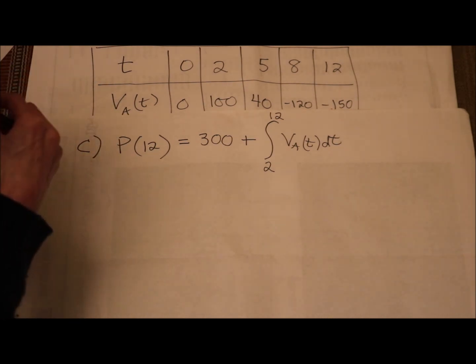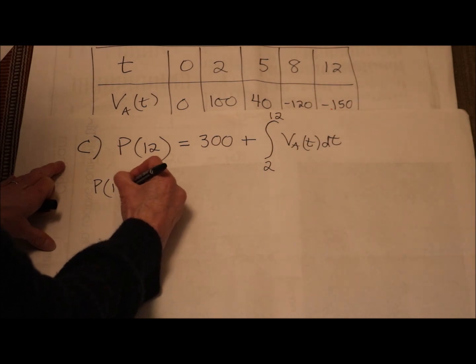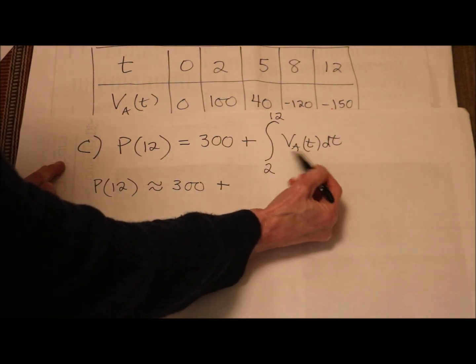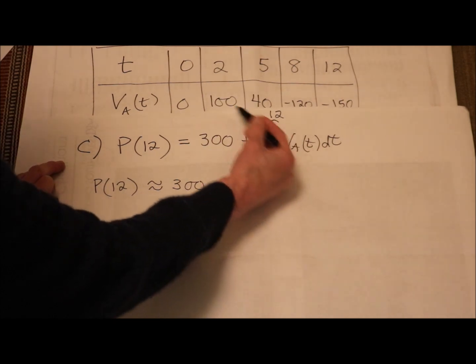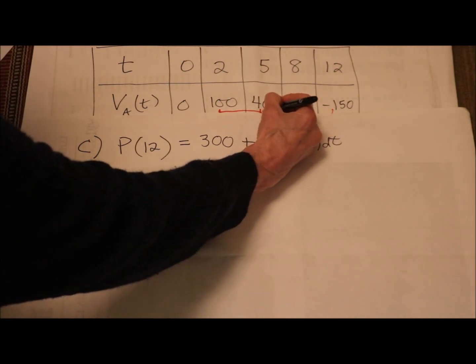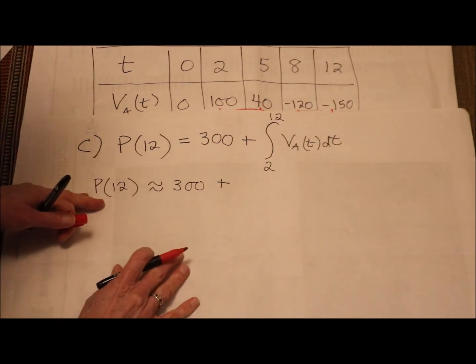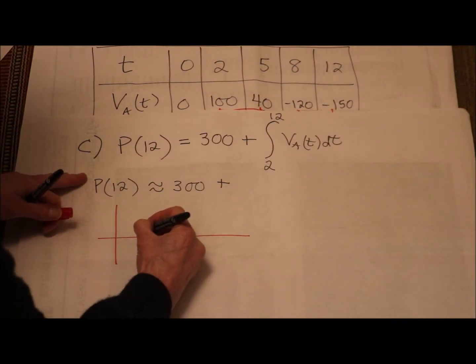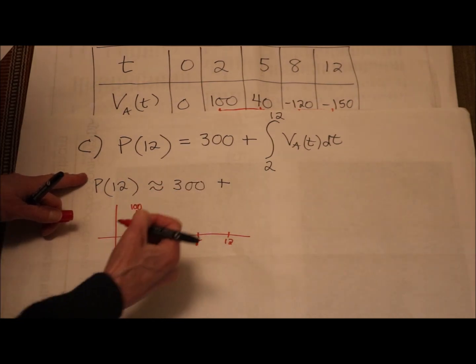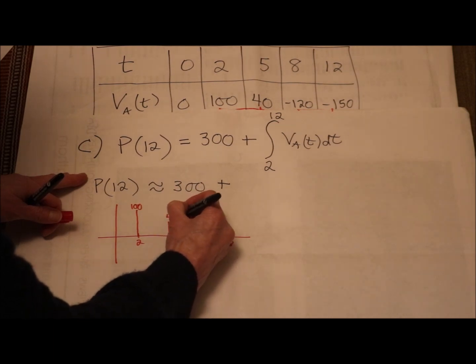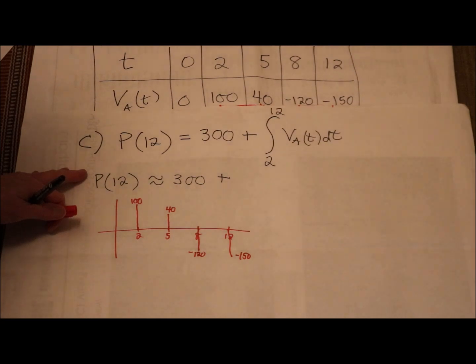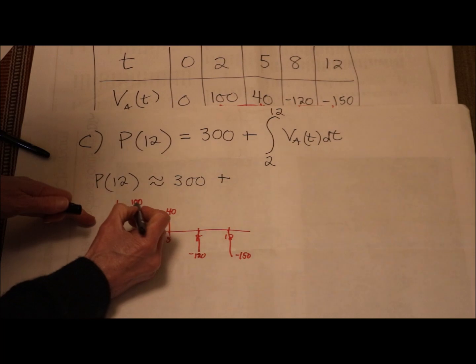The second part of C asks us to estimate P of 12 using a trapezoidal sum. So P of 12 is about equal to 300 plus, I'm going to use trapezoids to estimate the signed area under this curve. They want us to use 3 subintervals. I'm going from 2 to 12, so 1 interval is going to be from 2 to 5, 5 to 8, and then 8 to 12. I strongly recommend you make a little picture here. Here's 2 seconds, 2 minutes, 5 minutes, 8 minutes, 12 minutes. I'm going 100 meters per minute, 40, 8, now I'm in negative land, negative 120, and 12, negative 150. Now this is a little weird, because your middle thing isn't going to be a trapezoid, right? Your middle thing is really going to be like two triangles.